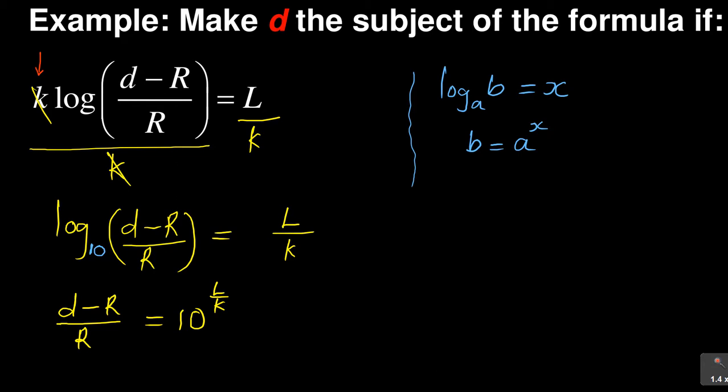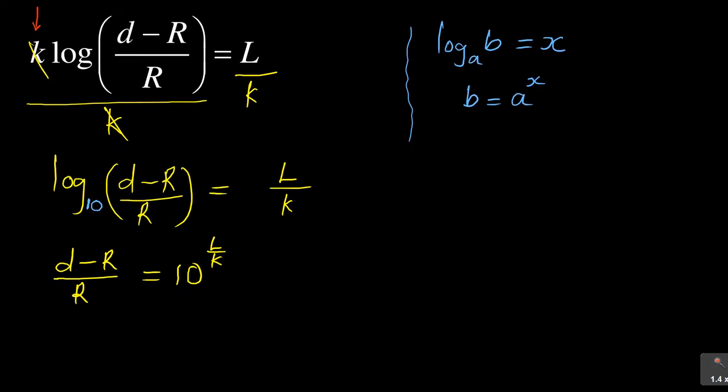And then when I've done that, it becomes more simpler. I've got a fraction, so I can multiply the left-hand side by R and I can multiply also the right-hand side by R. When I do that, it will then be d - R is equal to R times 10 to the exponent L over k.